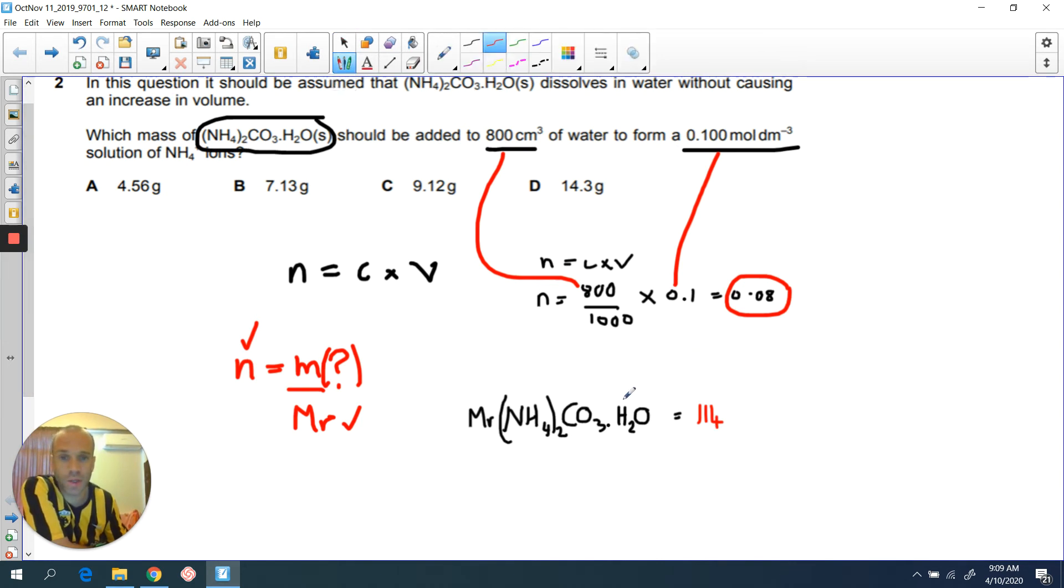A quick calculation here using our data book allows us to find out the molar mass of this compound, which is 114. So now you have all the necessary information. In order to find out the mass of the compound required, you're going to need to do number of moles, 0.08, times 114. And then the answer is 0.08 times 114, which is 9.12.